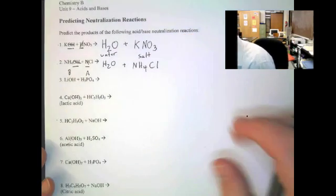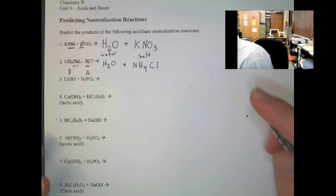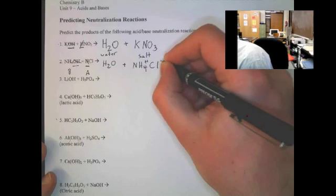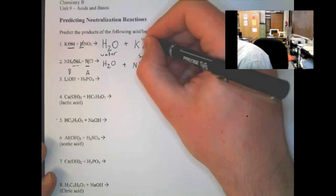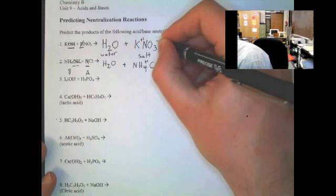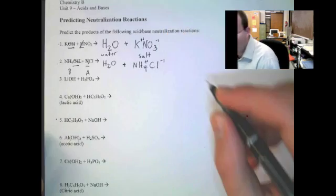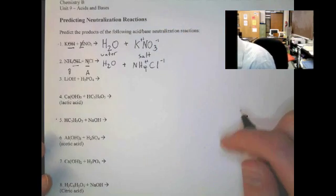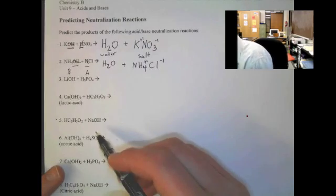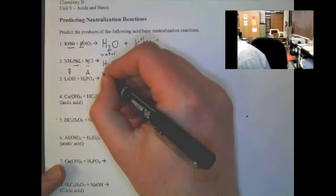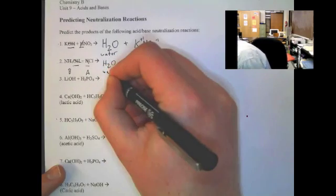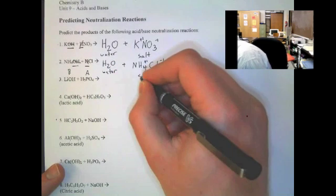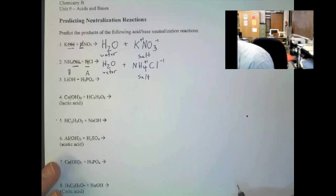If you remember ionic charges: ammonium is +1 and chlorine is −1. Up here, potassium is +1 and nitrate is −1, so those all work out. Again, notice that water is a product and we have another ionic salt as our second product.